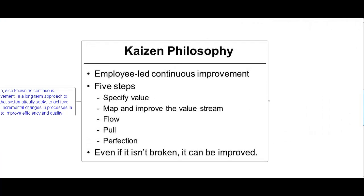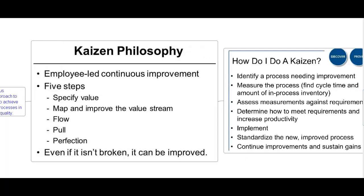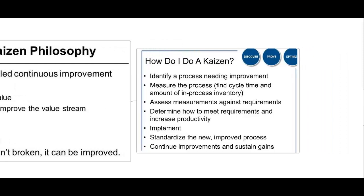The Kaizen philosophy employs continuous improvement with five steps: specify value, map and improve the value stream, flow, pull, and perfection. The philosophy holds that even if it is not broken, it can be improved. To do Kaizen: identify a process needing improvement, measure the process and find cycle time and amount of process inventory, assess measurements against requirements, determine how to meet the requirements and increase productivity, implement and standardize the new improved process, and continue improvement and sustain gains.